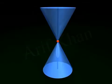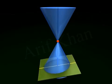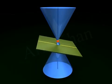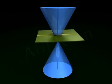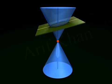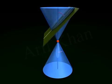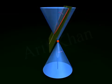Hyperbola. The plane intersects only one nap of the double right circular cone as long as the angle between the plane and the vertical axis is greater than or equal to the vertex angle.